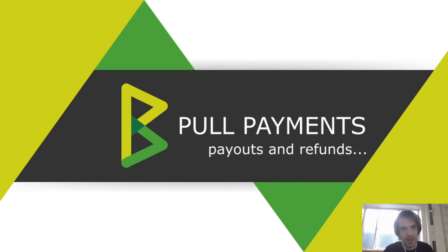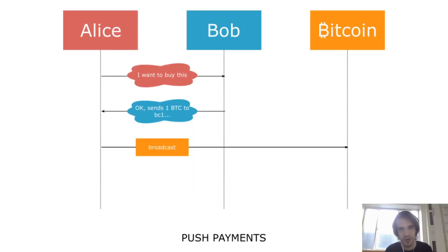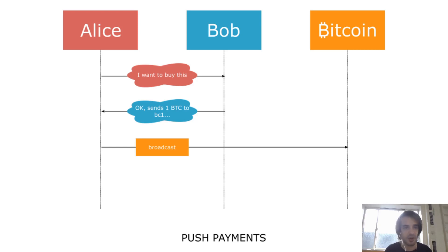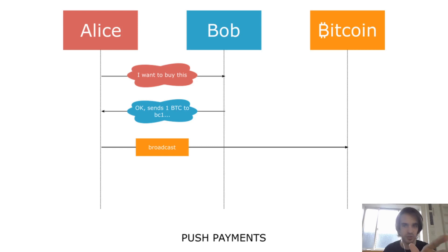So I will start with a little bit of theory. Traditionally, when you want to pay with Bitcoin, we use what we call push payments. It's a technical word that means that the sender of the money is the one consciously taking the decision to push a payment to the receiver.